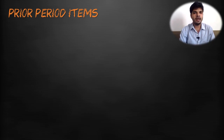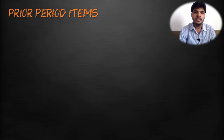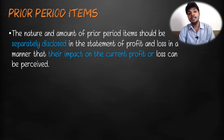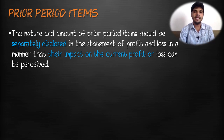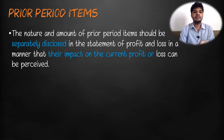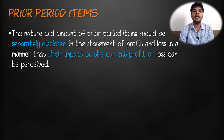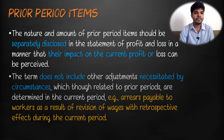Regarding the treatment of prior period items: the nature and amount of prior period items should be separately disclosed in the statement of profit and loss in a manner that the impact of such items on the current year's profit can be perceived. However, the term 'prior period items' does not include other adjustments necessitated by circumstances which, though related to prior periods, are determined in the current period.